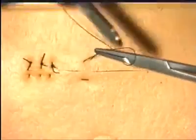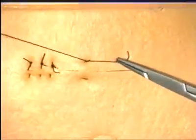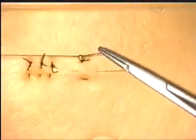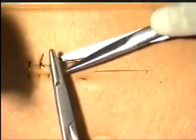One can see very clearly why this is called a horizontal mattress suture. Once again, the reef knot is tied in the standard manner and the suture material cut.